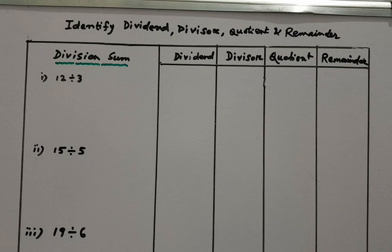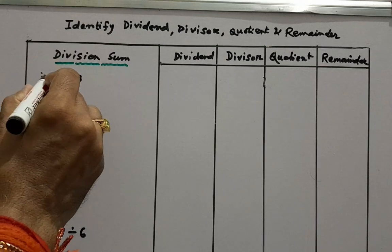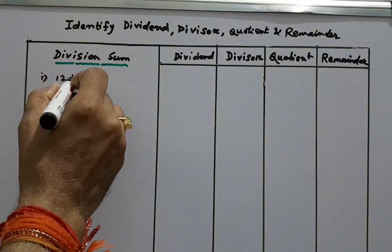Here three examples are given. We will do the division and then find out dividend, divisor, quotient and remainder. Here first example is 12 divided by 3.